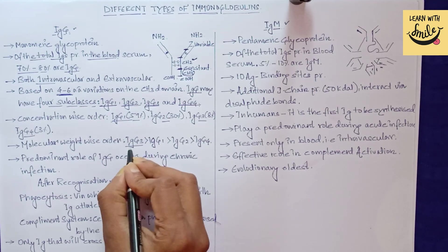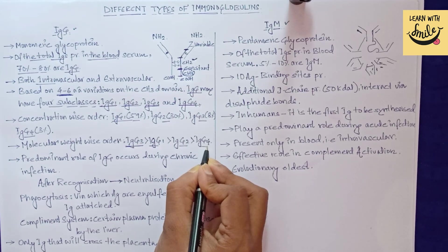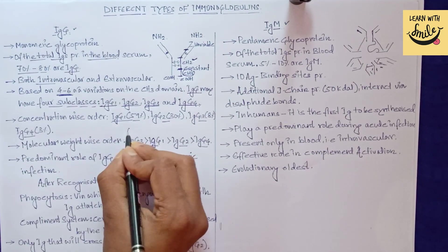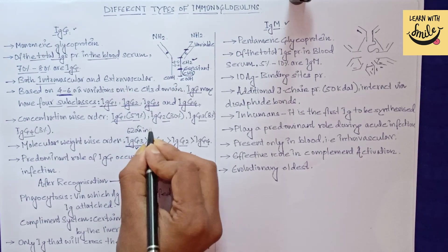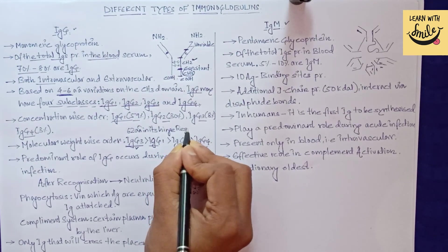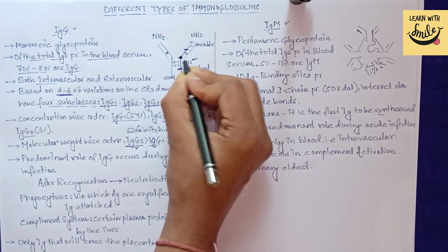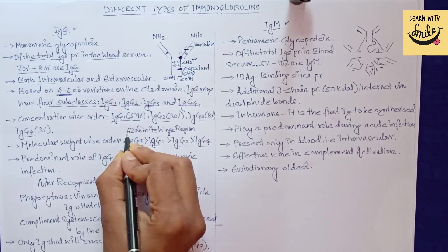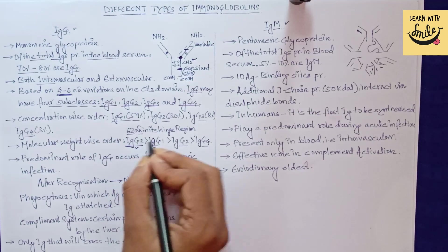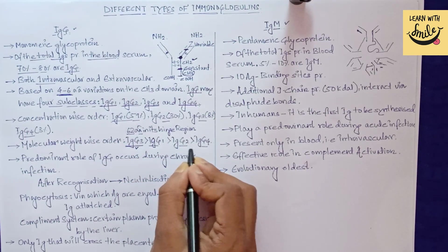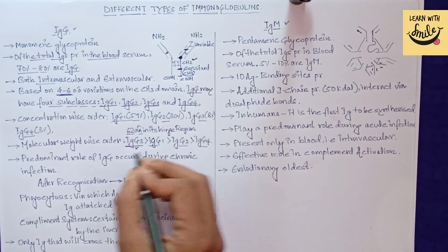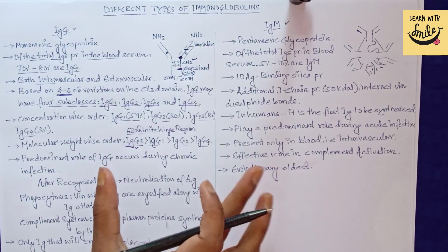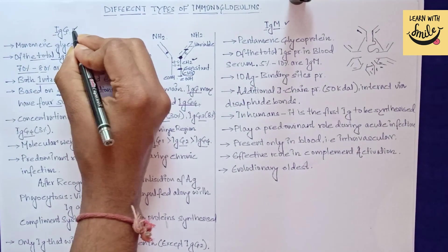Regarding molecular weight, IgG3 has the highest molecular weight, followed by G1, G2, and G4. IgG3 has 62 amino acids in its hinge region — the region connecting the two portions of the immunoglobulin — whereas IgG1, IgG2, and IgG4 each have approximately 10 amino acids in their hinge region. This explains why IgG3 has the highest molecular weight.